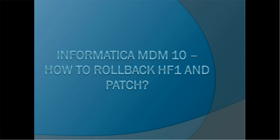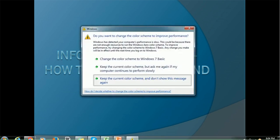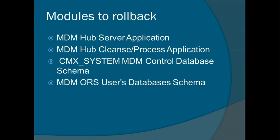Let's see how to roll back a hotfix and get the original version. For example, if you have installed MDM 10.1 and on top of that you installed hotfix 1, the actual version becomes 10.1.1. If you'd like to revert from 10.1.1 back to 10.1, or if you have MDM 10.2 with a patch that is not working, that process is called rollback of hotfix, patches, or emergency bug fix — also called EBF.